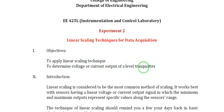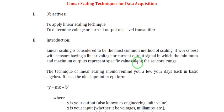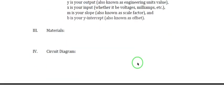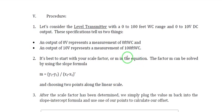So this module is already uploaded in our virtual classroom module. Just read this. And just go to our procedure. So for this particular level transmitter, we are talking of a 0 to 100 feet water column range and a 0 to 10 volt DC output.